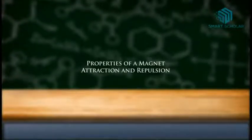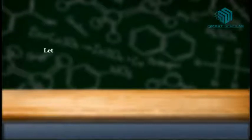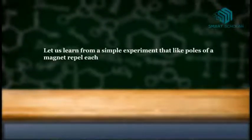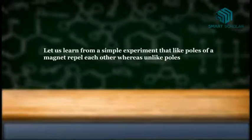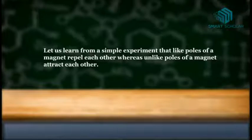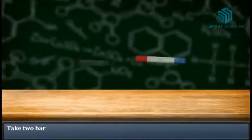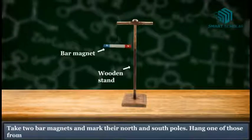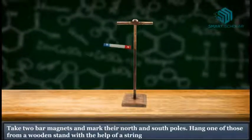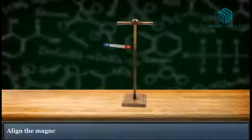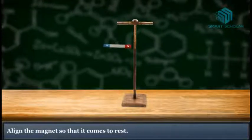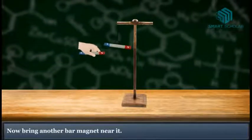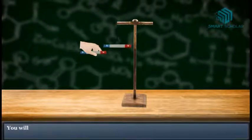Properties of a magnet: attraction and repulsion. Let us learn from a single experiment that like poles of a magnet repel each other, whereas unlike poles of a magnet attract each other. Take two bar magnets and mark their north pole and south pole. Hang one of these from a wood stand with the help of a string, and align the magnet so that it comes to rest. Now bring another bar magnet near it.